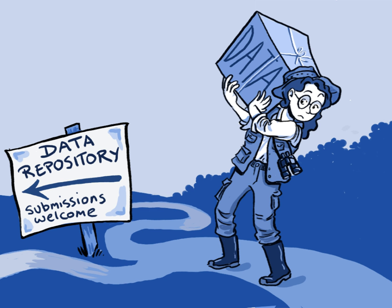Many funding agencies, institutions, and publication venues have policies regarding data sharing because transparency and openness are considered by many to be part of the scientific method. A number of funding agencies and science journals require authors of peer-reviewed papers to share any supplemental information necessary to understand, develop or reproduce published research.